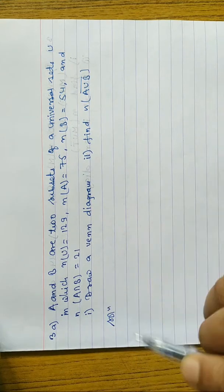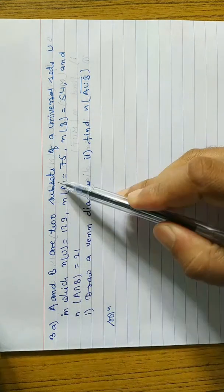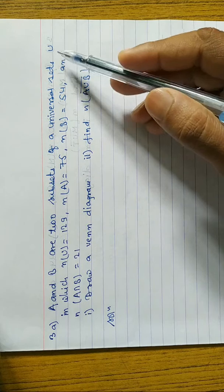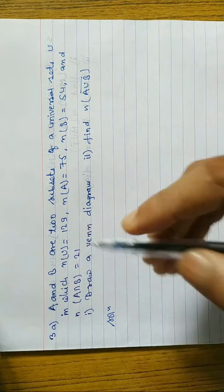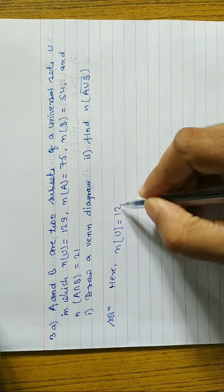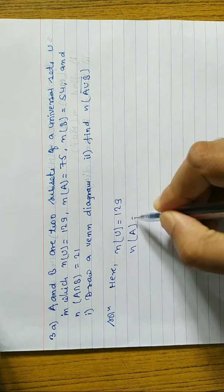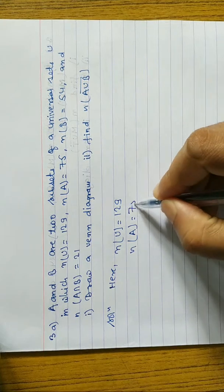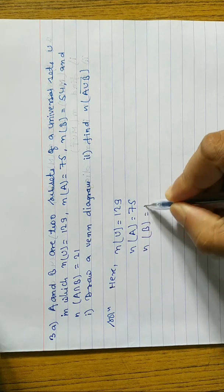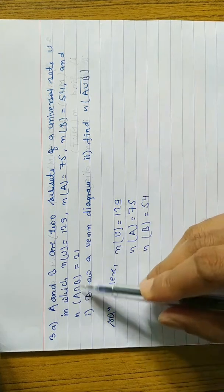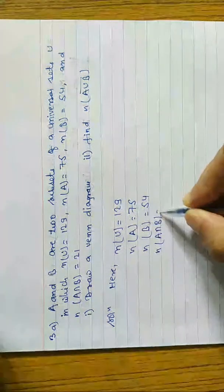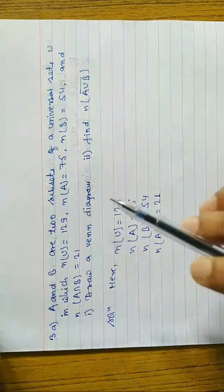Question number 3a: A and B are two subsets of universal set U, where n(U) is equal to 129. The cardinal number of A — n(A) — is 75, and the cardinal number of B — n(B) — is 54. Similarly, n(A∩B) is equal to 21.